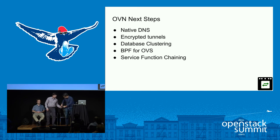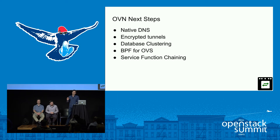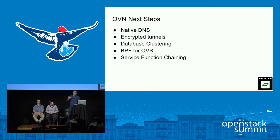Looking ahead, we're planning native DNS support so OpenStack internal names can be resolved. We want to provide an easy mechanism to enable encrypted tunnels between hypervisors, most likely using IPsec — the central database makes key distribution straightforward. We're looking at alternatives for database clustering to improve scalability and eliminate single points of failure. The last two items are BPF for OVS and service function chaining.